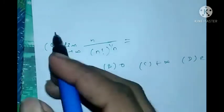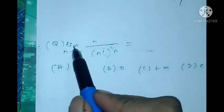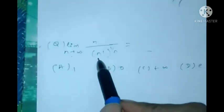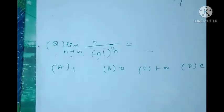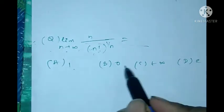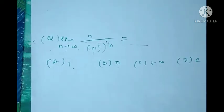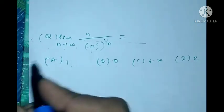This is the second question, asked in K-SET: the limit as n tends to infinity of (n^n / n!)^(1/n). Option A is 1, option B is 0, option C is plus infinity, and option D is e.